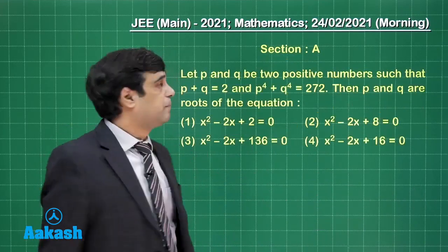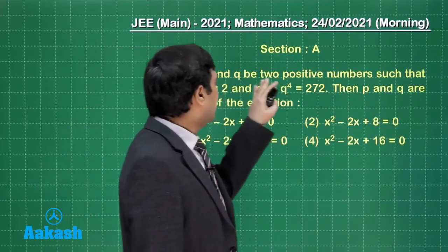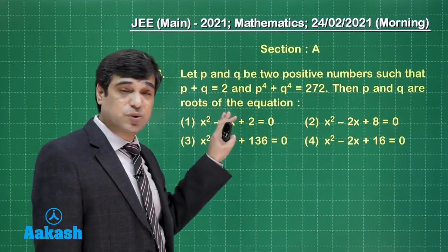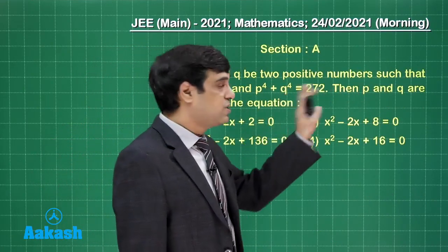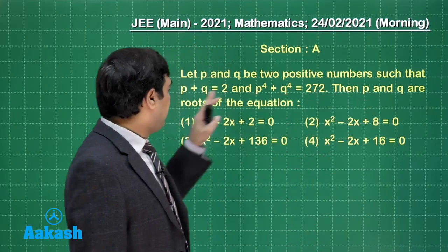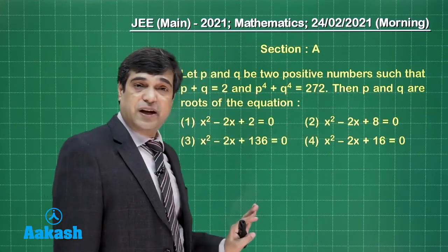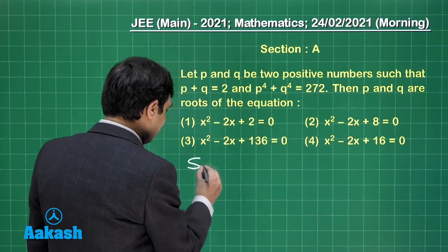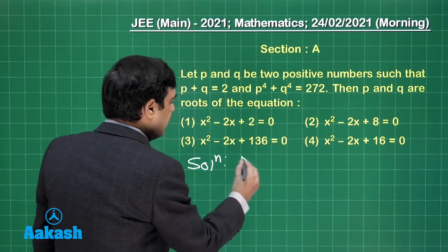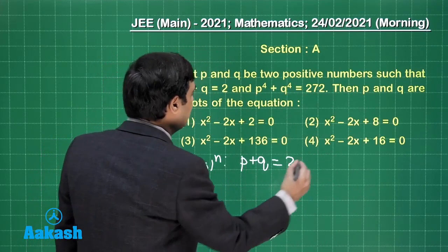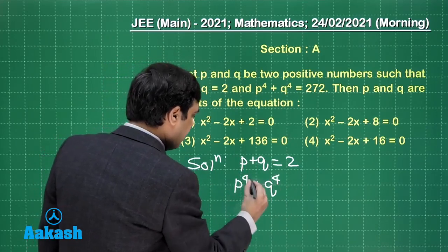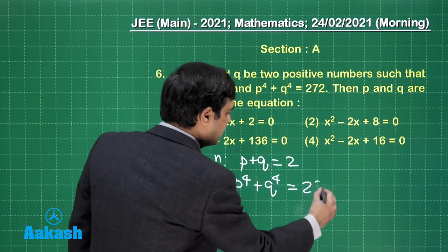Let us take up the next question now. Let p and q be two positive numbers such that p plus q is 2, p⁴ plus q⁴ is 272, then p and q are the roots of the equation. Pretty simple one. Let us try out.